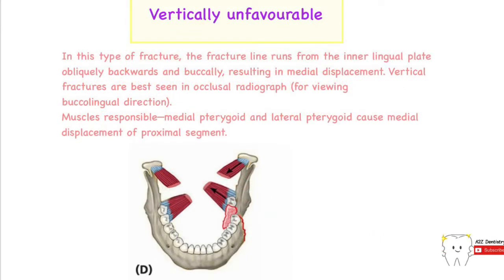In vertically unfavorable fractures, the fracture line runs from the inner lingual plate, passes obliquely backwards and buccally, and results in medial displacement. Unlike vertically favorable fractures where the line passed from the buccal cortical plate, here it goes buccally. This direction decides the favorability of the fracture. The action of the medial and lateral pterygoid muscles will tend to displace the fracture segments away from each other.